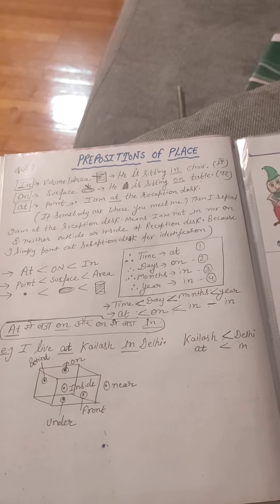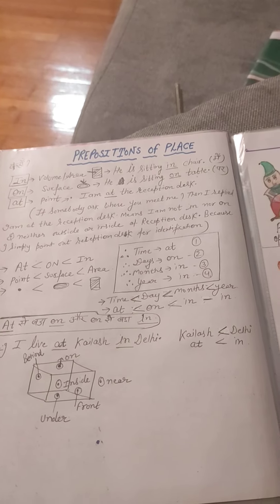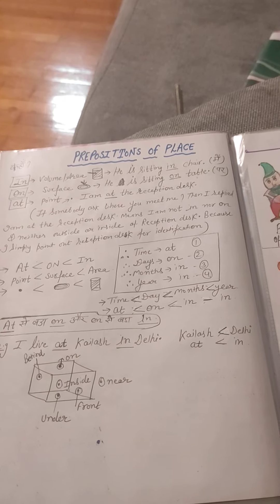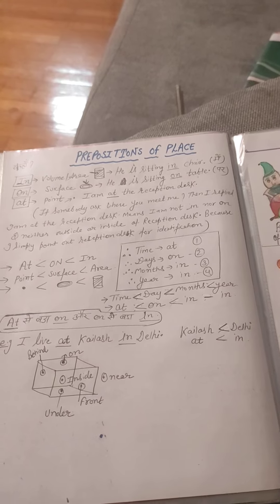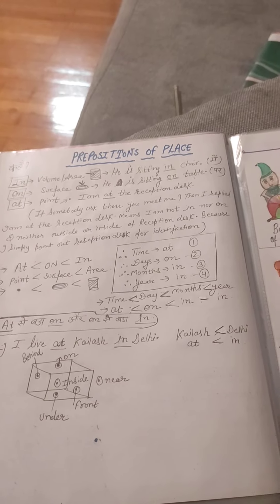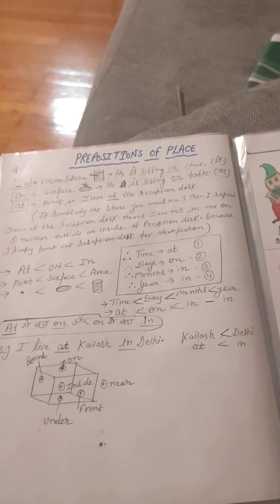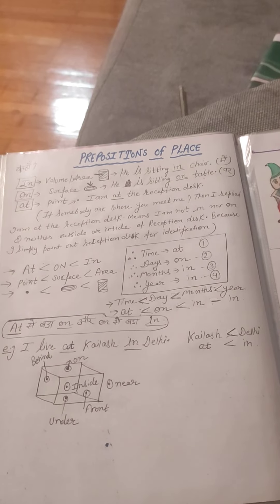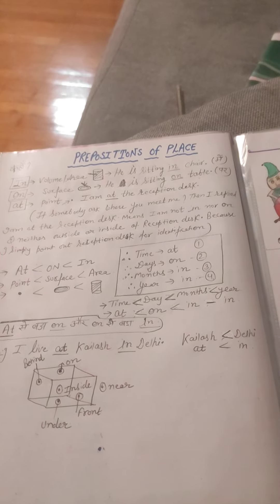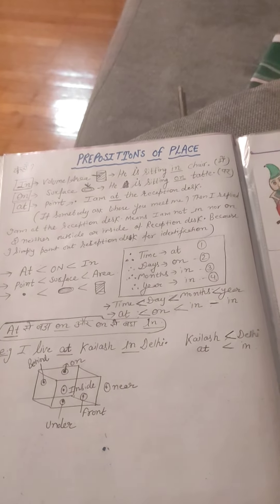With time, we use at. With days, we use on — on Monday. With months, we use in — in January. With year, we use in — in 1815, 7.